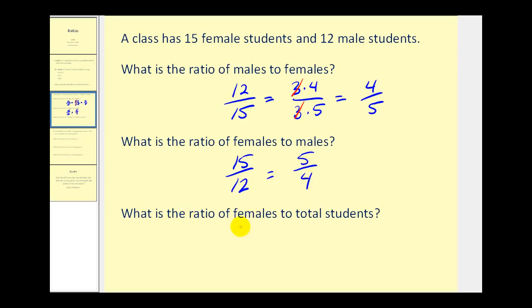Lastly, if we want the ratio of females to the total number of students, there are 15 female students. The total number of students would be 15 plus 12 or 27, so the ratio would be 15 to 27.